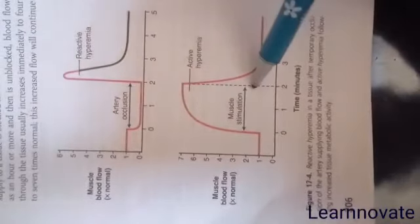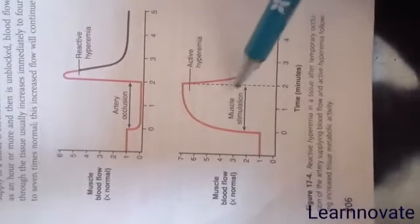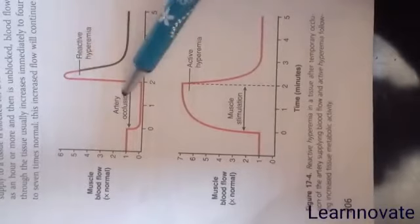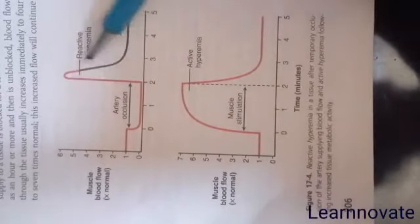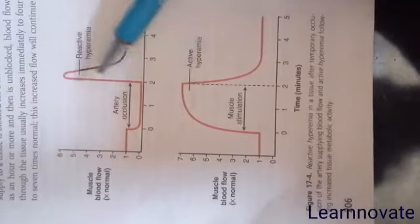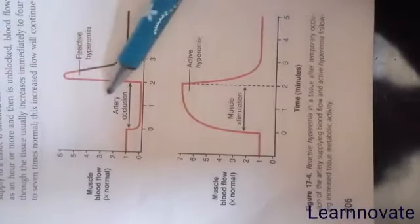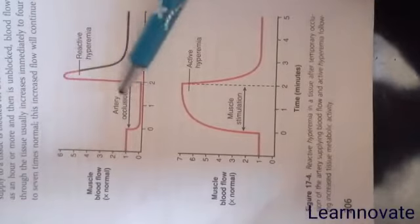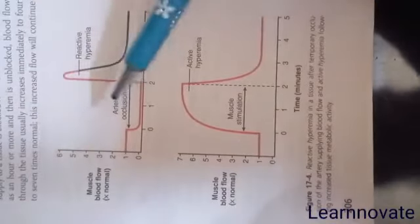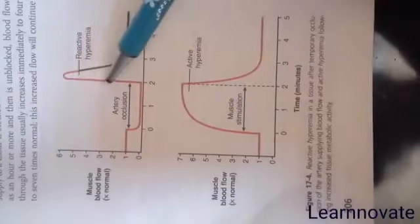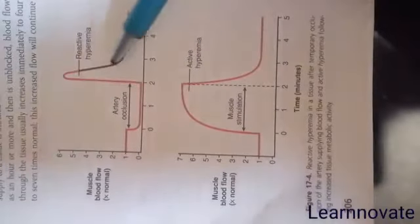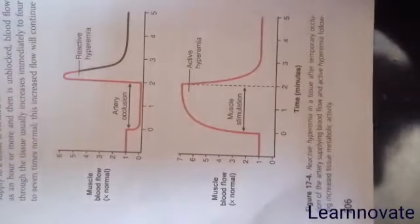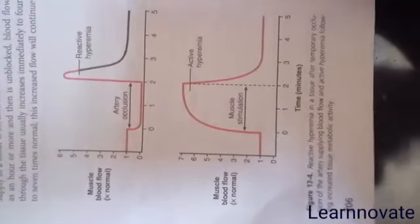In the active hyperemia condition, the cause is related to increased tissue metabolism. In reactive hyperemia, the condition was related to tissue hypoxia — that is, decreased oxygen due to artery occlusion. These are two different cases that we call the metabolic theories of acute local blood flow control.